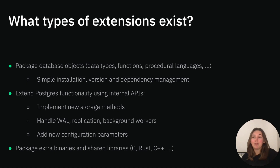So what types of extensions are there? First, and probably the most common use of extensions, is creating a package of SQL objects. Usually these are data types specific to some business domain, functions, triggers, and so on. More complex examples of database objects are procedural languages, such as PLPython or PLV8, which are also distributed as Postgres extensions. This type of extension model simplifies installation and version management. They also implement dependency management, making sure that everything works together smoothly.